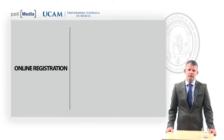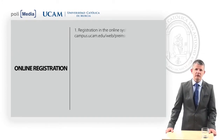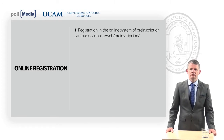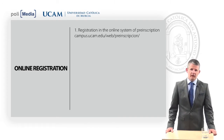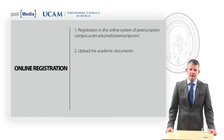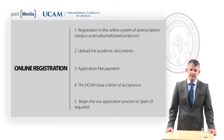After receiving approval from our team, the candidate may start the online registration through this webpage. With this tool, the future student will input their personal data, select their choice of studies, and upload the required documents to the admission system. After that, a first payment will be made, corresponding to the inscription fee of UCAM.